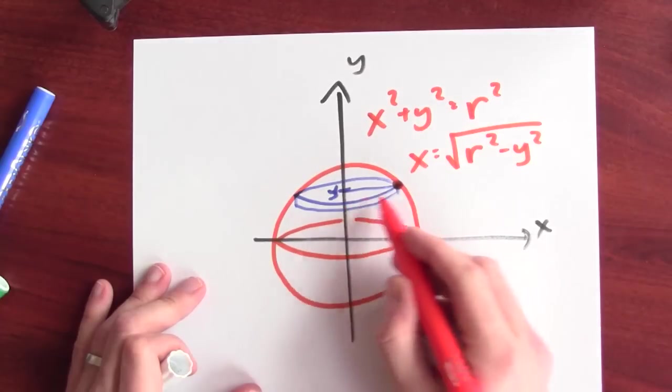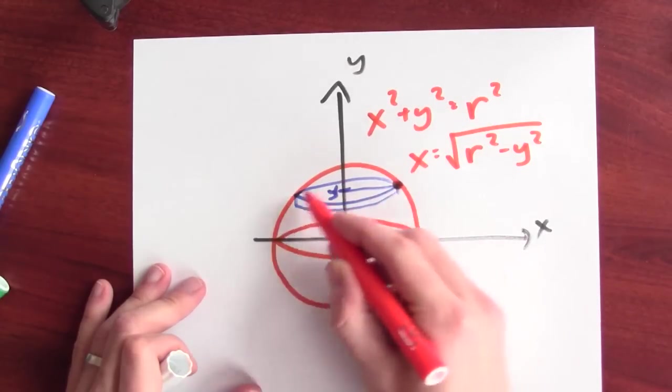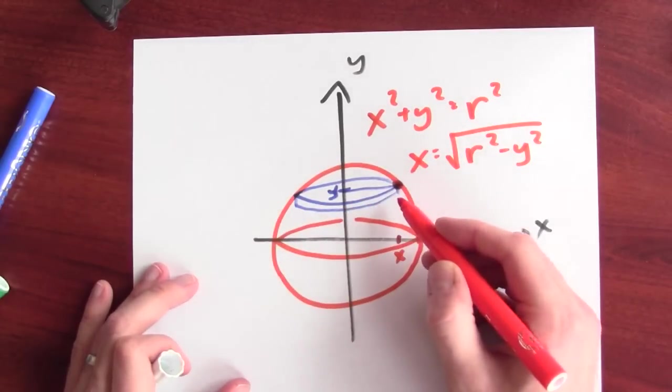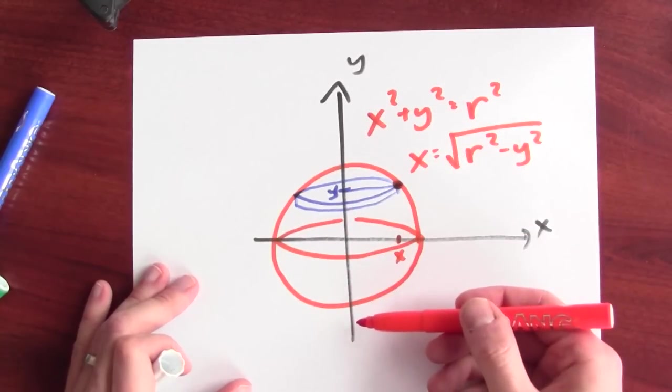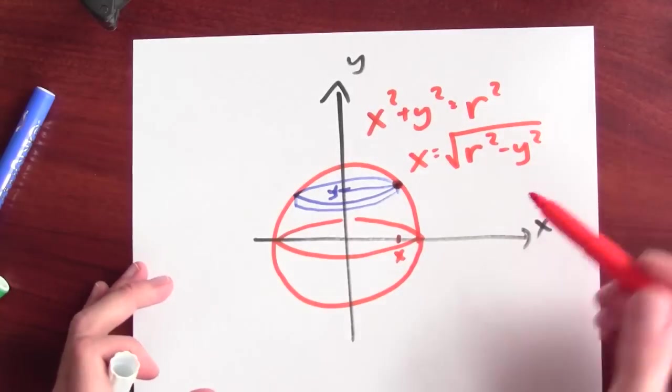This is the radius of this little tiny thin blue cylinder here. And I'm going to cut up my sphere into a whole bunch of these little tiny cylinders and add up the volumes of those cylinders to give me the volume of the whole sphere.